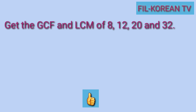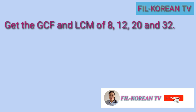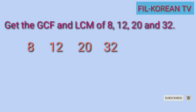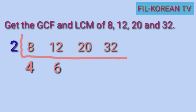For the last example, we will get the GCF and LCM of 4 numbers: 8, 12, 20, and 32. We will still use Continuous Division — we will divide these four numbers by their prime factors. We can divide them by 2: 8 divided by 2 equals 4, 12 divided by 2 equals 6, 20 divided by 2 equals 10, and 32 divided by 2 equals 16.